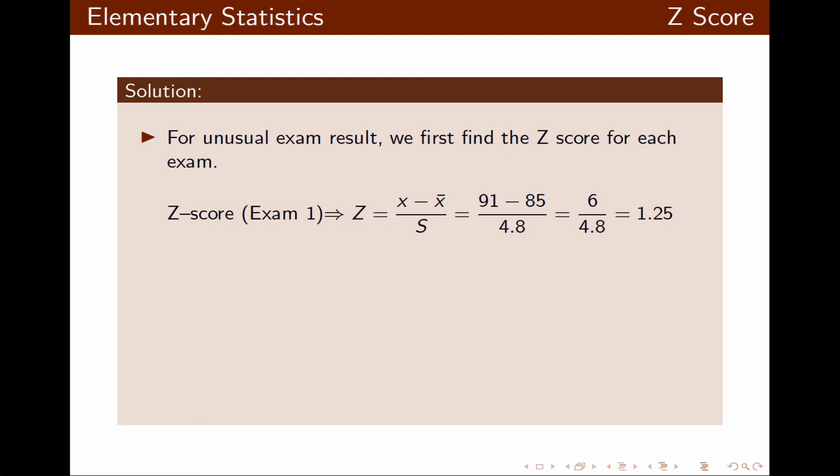And for exam 2, we do similar calculation with different numbers, and the z-score is 1.5. Both of these z-scores fall within negative 2 and 2. Therefore, they're considered to be usual.